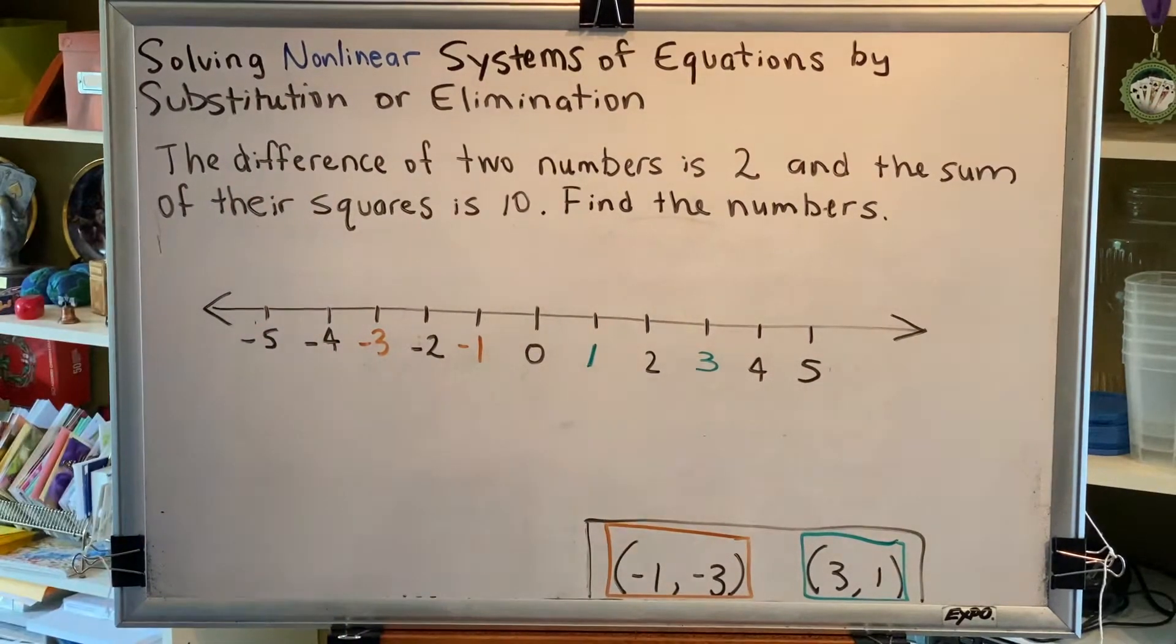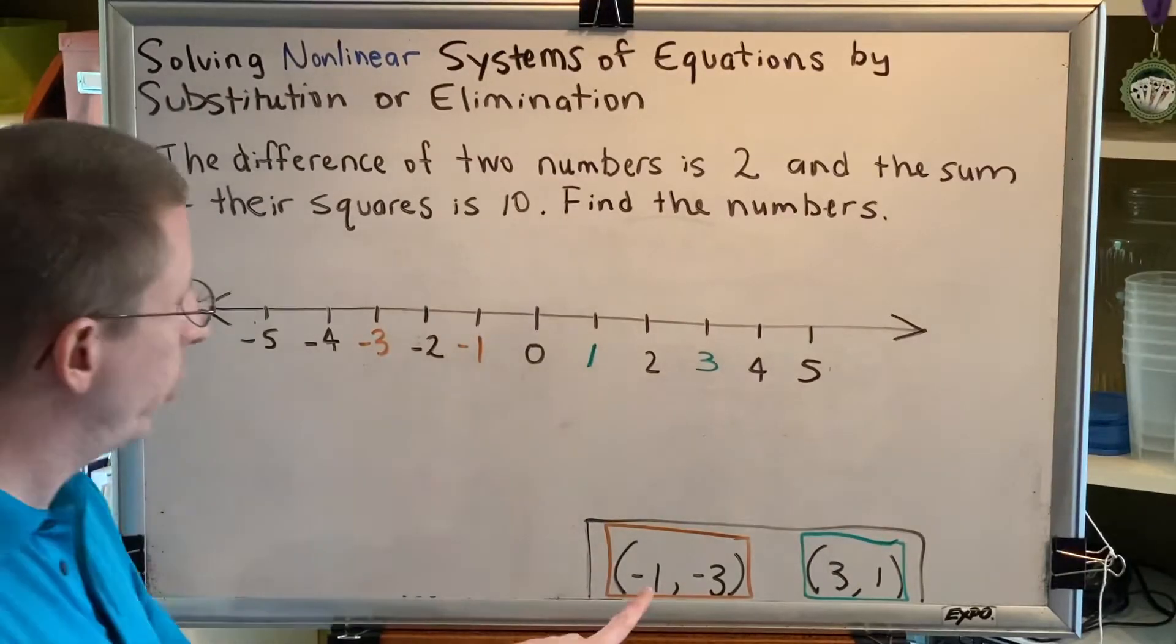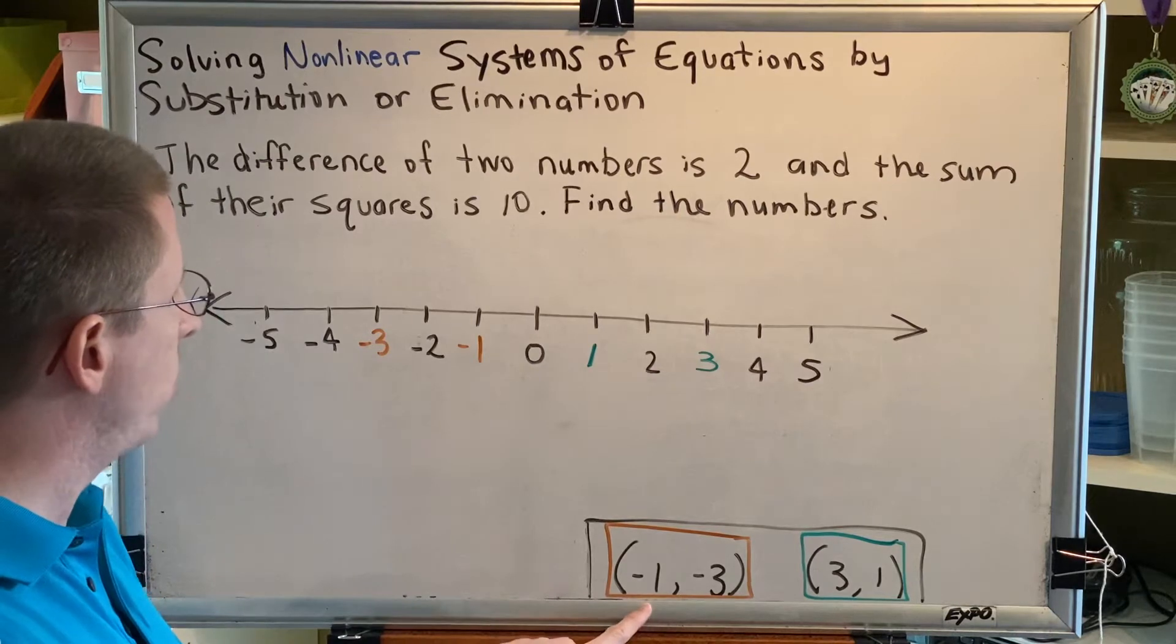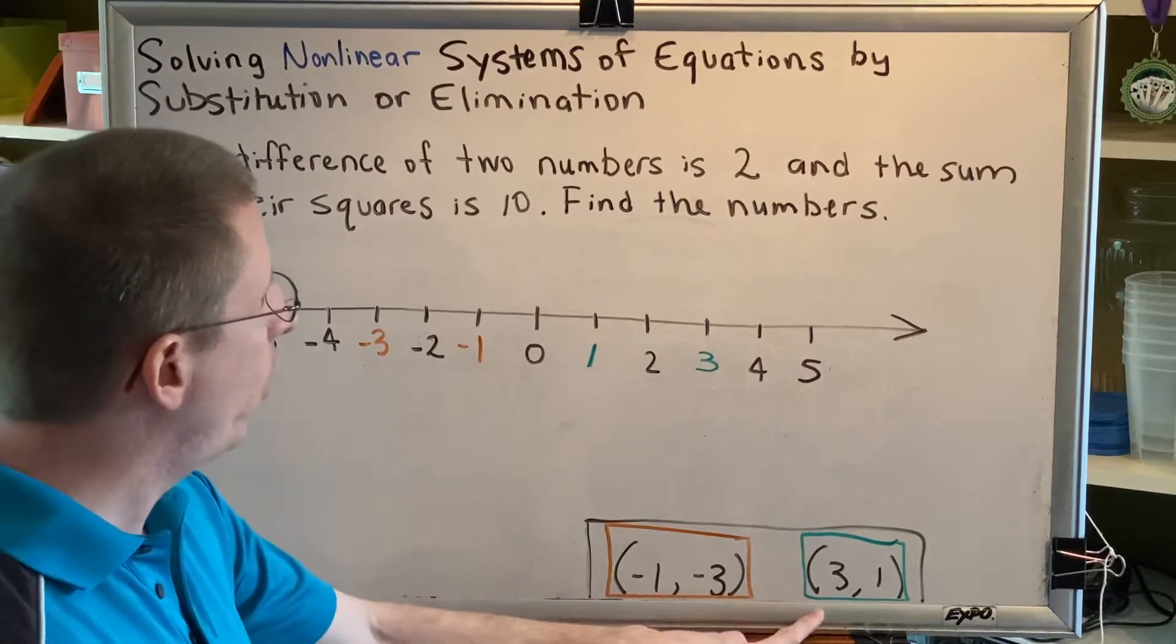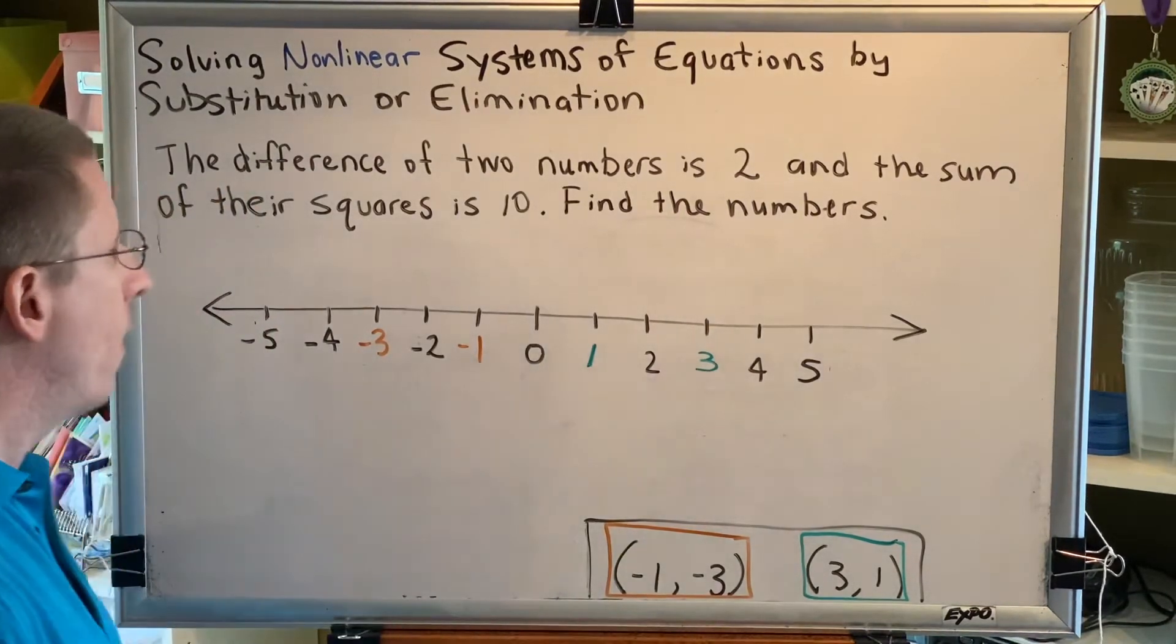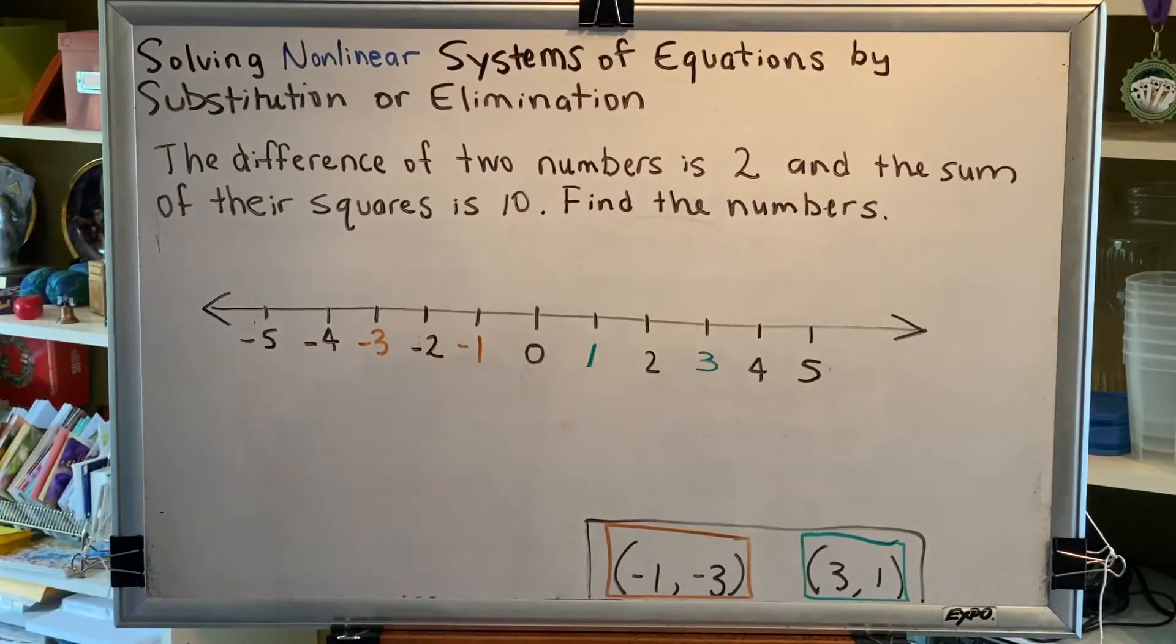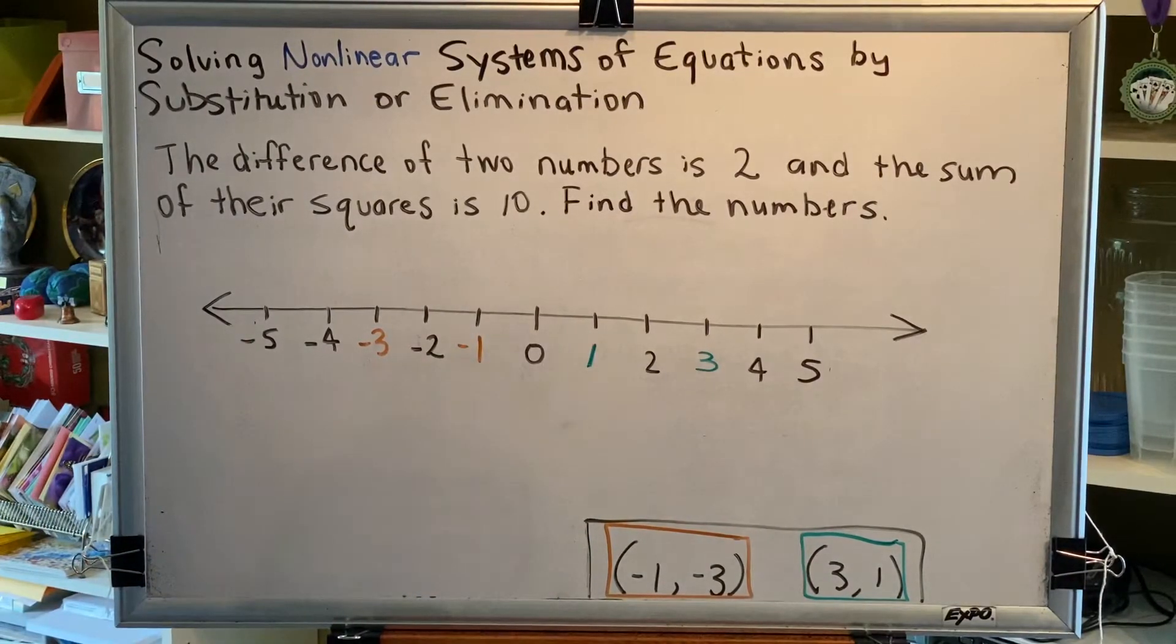Now is the part where we check. You'll notice that I have colored both of our solutions in boxes. We've got our orange box solution, negative 1, negative 3, and our green box solution, 3, 1. I've also drawn a number line here where I've shown those numbers in their respective colors. We're going to use this number line to check our answer.